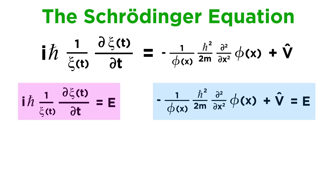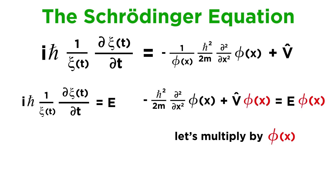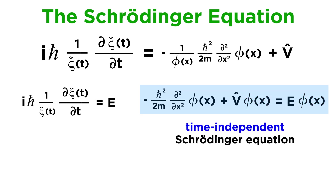We are going to do something important with each of these, but let's work with the one containing φ first. For this equation, let's multiply both sides by φ(x). That gets rid of one term and puts φ(x) next to both V and E. This is the time-independent Schrödinger equation. As you can see, nothing in here depends on time, and this gives the equation some important applications which we will be investigating as we move forward — though since we are used to representing wave functions with ψ, we will be seeing this with ψ instead of φ.